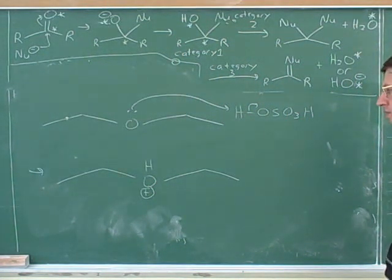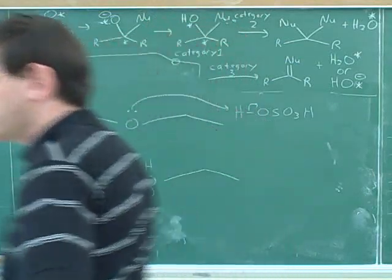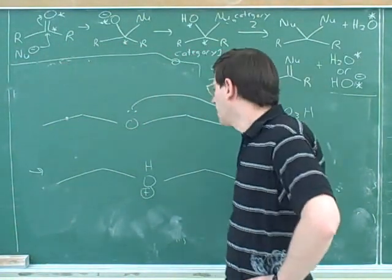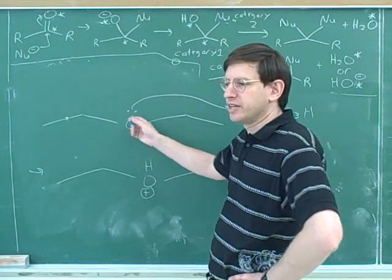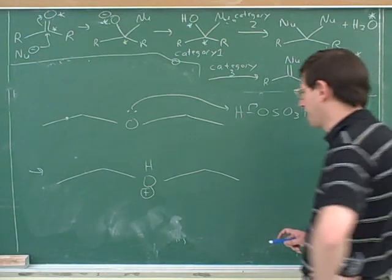So if a base attacks, then it would probably just steal the H. Because that's what bases like to do, they like to deprotonate. Right. Yeah, so a base might simply steal this proton. However, that wouldn't be very interesting, because that would just get us back to where we started. Is there anything more interesting that a base could do? It could steal an H from an alpha carbon? Could it attach to the O and break the bond? Isn't that what the nucleophile would do? Maybe we should have started with a nucleophile. Yeah. So let's start with how would a nucleophile react here?